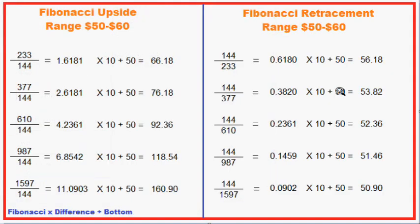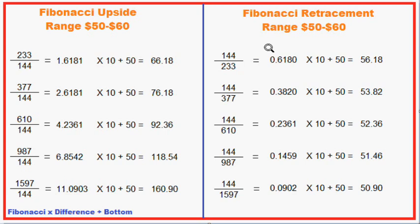Let's take an example and assume we have a range from 50 to 60. We take the Fibonacci, multiply the difference — in this case the range is 10 — and add the bottom of 50. For the 161.8% level, we take 1.618, multiply by 10, and add 50, that gets us 66.18. So if we were trading in a range from 50 to 60 and breaking out, the Fibonacci can tell us the next likely resistance target would be 66.18. We'll cover more Fibonacci upside within this video.